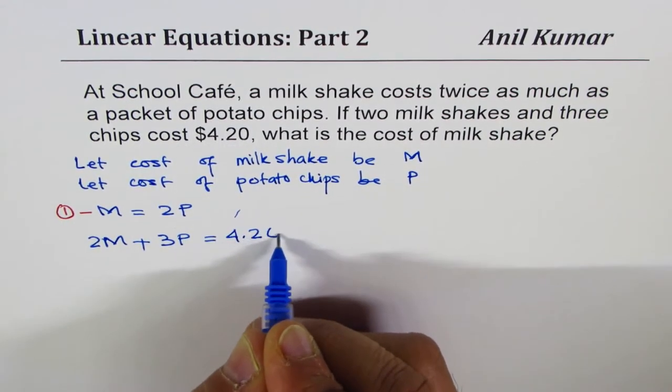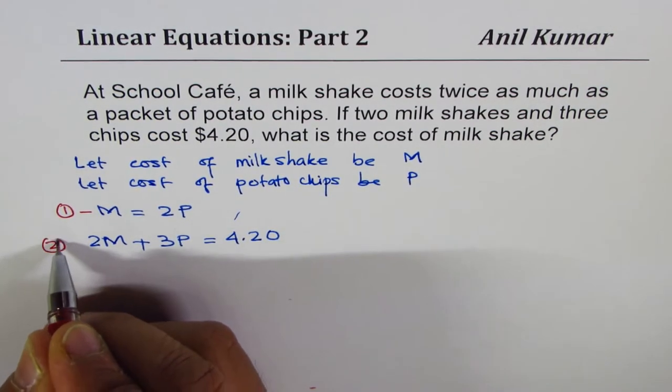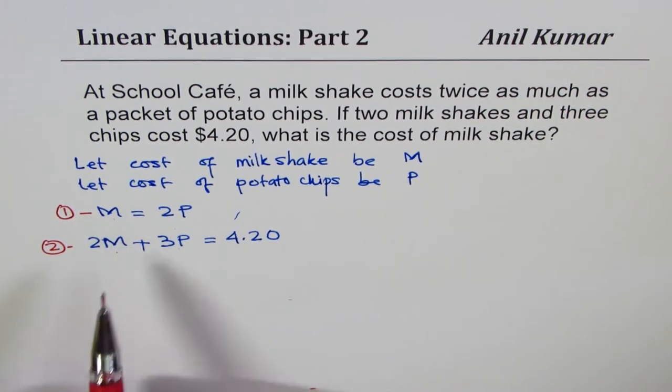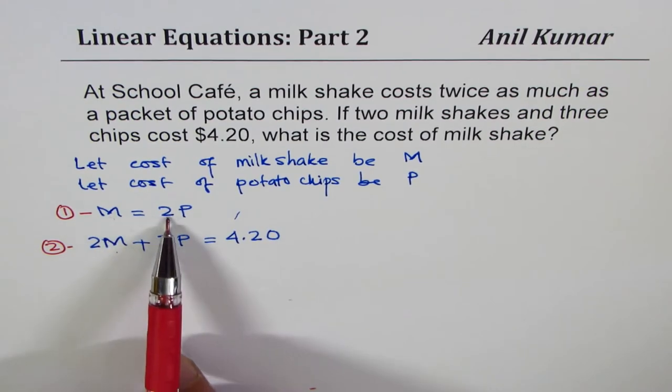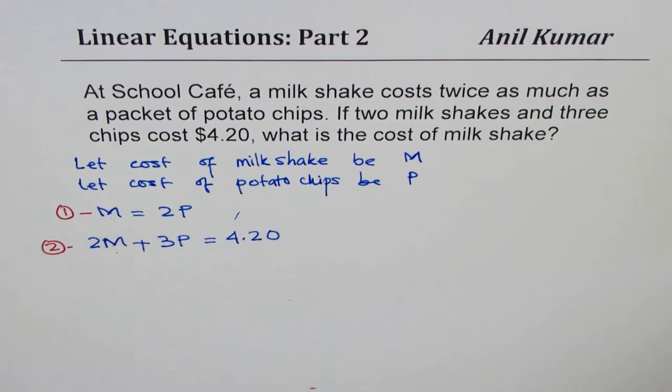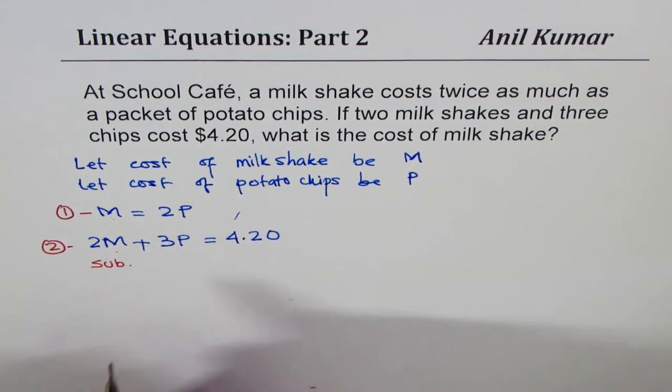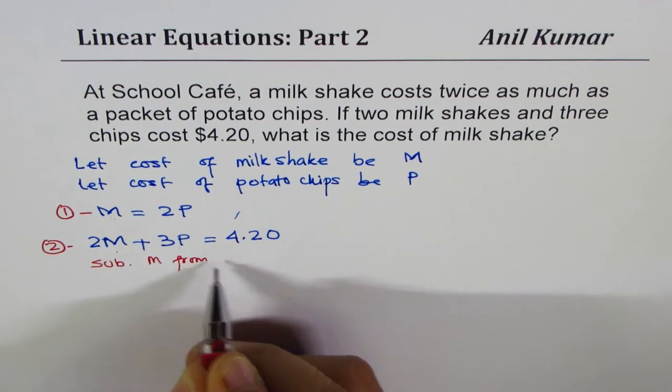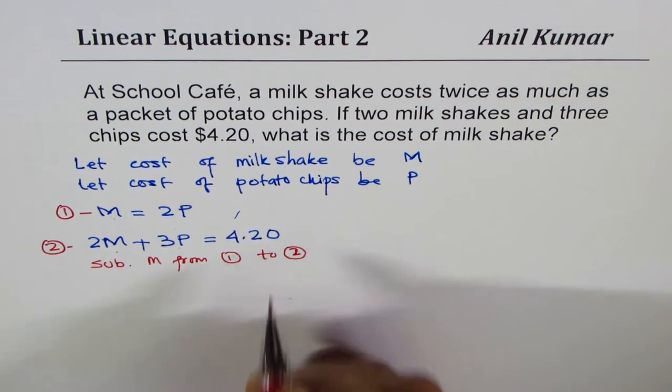We have two variables and two equations, so we can solve it. Instead of M, I can put 2P—that's what we call substitution. We'll substitute M from equation 1 into equation 2.